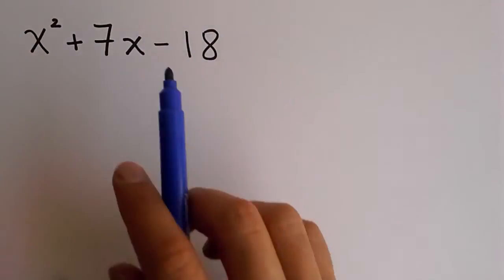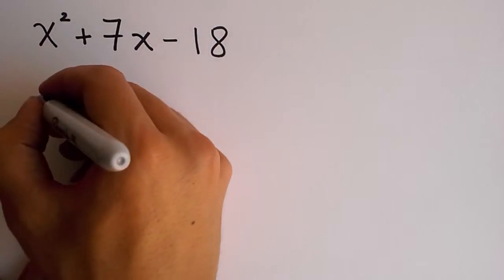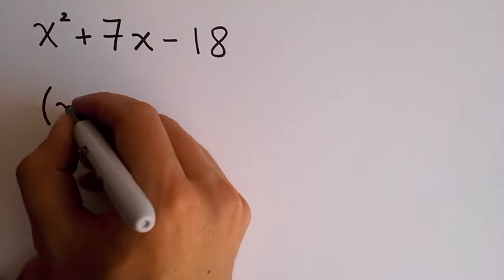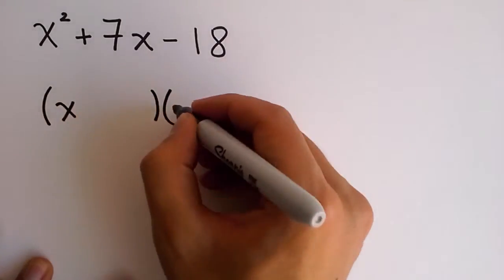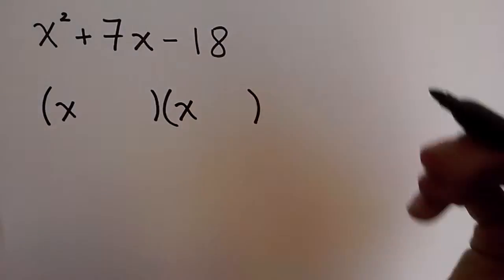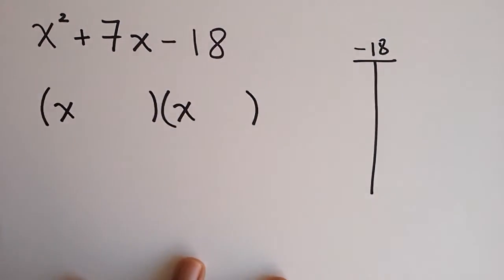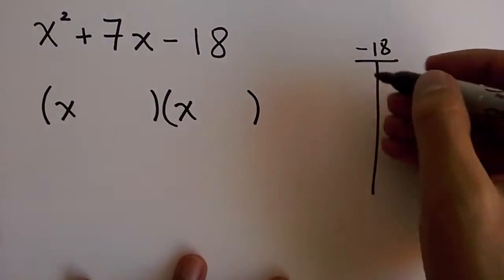Let's check out our second example where in the constant term we have a negative number. Same thing. You want to build up two parentheses. Immediately you know that the first two terms in each one of them is x. Now, if you think about negative 18, there are many more factors because you need to consider positive and negative ones.